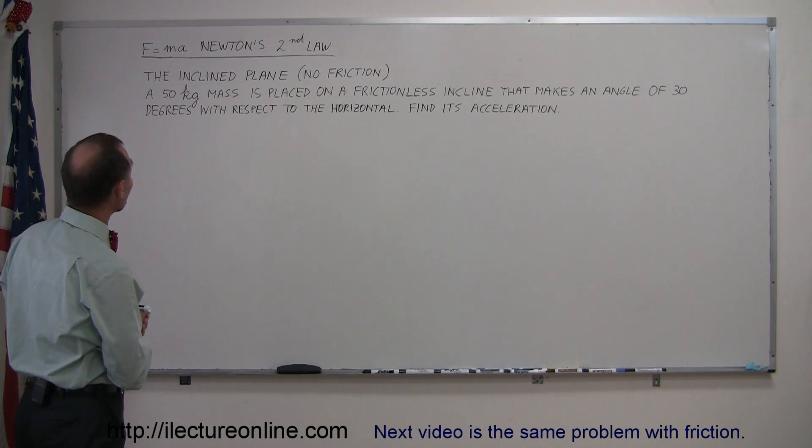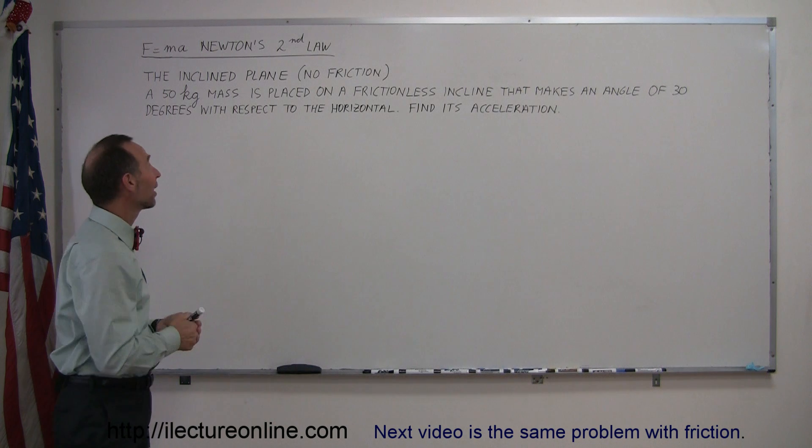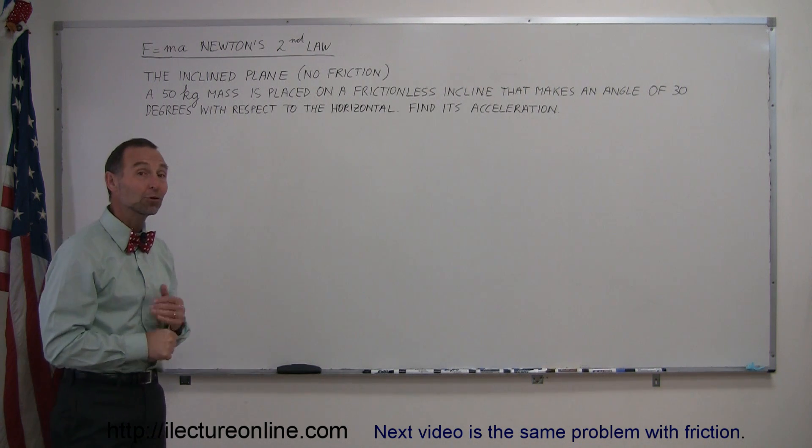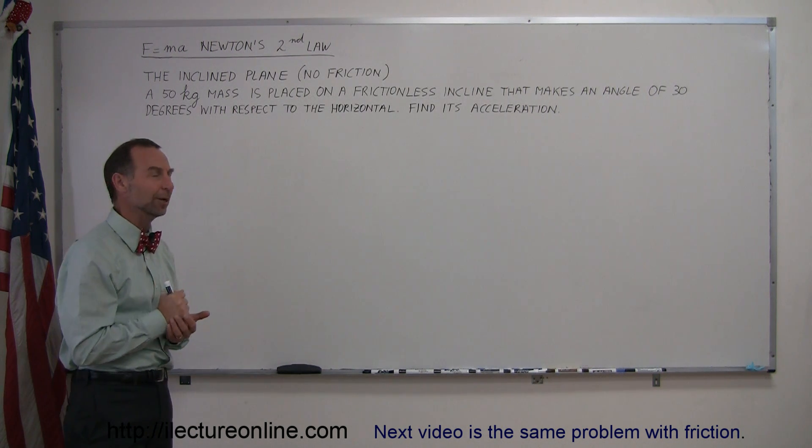Today we're going to talk about some physics. In particular, we're going to talk about Newton's second law, and that's also known as F equals ma. F equals ma is probably the most known equation in physics, that one, and probably E equals mc squared.